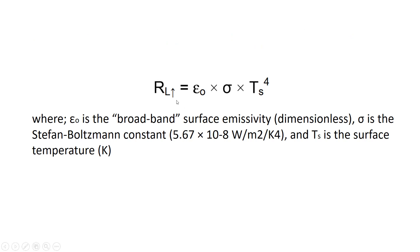Outgoing longwave radiation is computed using the Stefan-Boltzmann equation: broadband surface emissivity (dimensionless) multiplied by the Stefan-Boltzmann constant multiplied by surface temperature Ts raised to the fourth power.